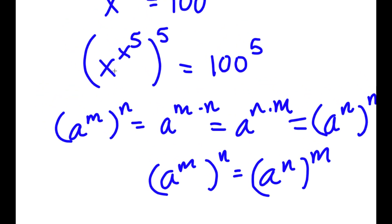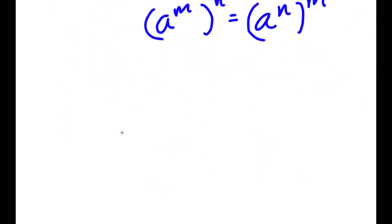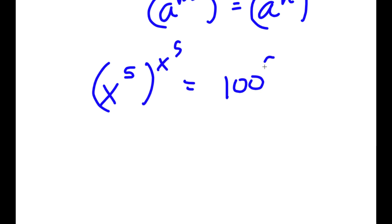Over here we have x to the power of x to the power of 5, all to the power of 5. Thinking of x to the power of 5 as m and 5 as n, and switching those two places, I get x to the power of 5 to the power of x to the power of 5 is equal to 100 to the power of 5.